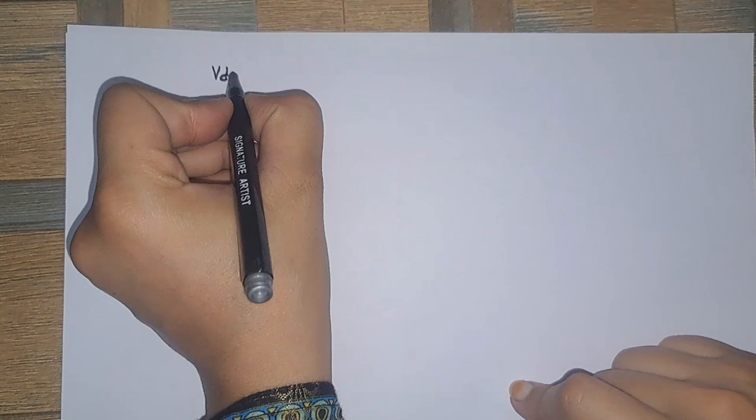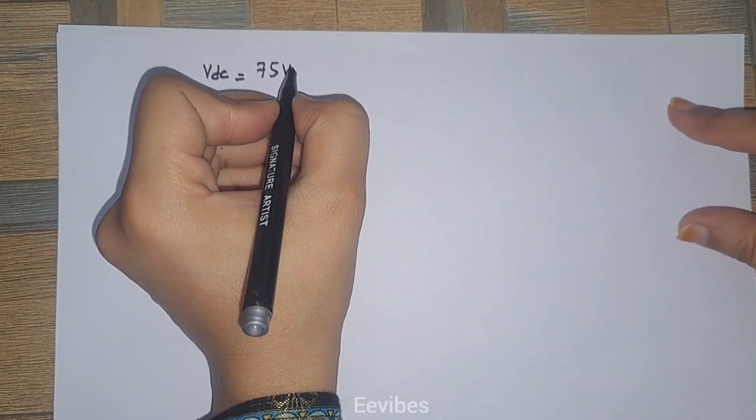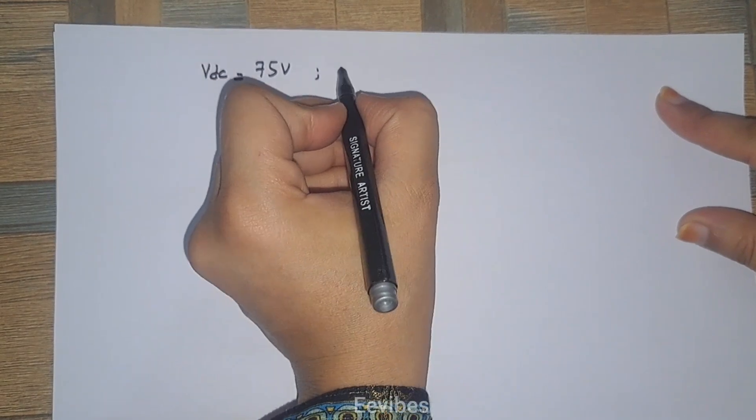Hi everyone, this is Asma Mishtak from EE Vibes. In this video lecture I'm going to solve a numerical problem related to rectifiers. A certain rectifier produces a DC output voltage of 75 volts, so VDC = 75V, with a peak-to-peak ripple voltage Vpp